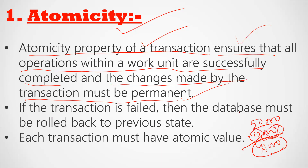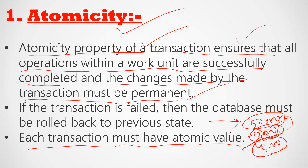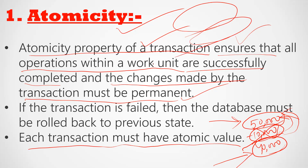But if the transaction fails, then the database must be rolled back to the previous state. If the transaction is not successful, the database reverts to its previous state. Each transaction must have an atomic value — meaning either the transaction is successful and the value is stored, or it is not successful and the previous state is restored. Atomic value means a unique or single value.